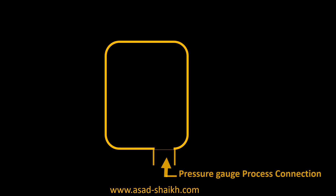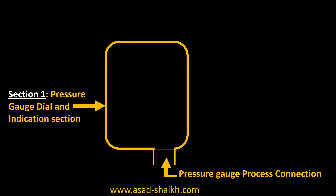Let's imagine that this is our pressure gauge and this is our process connection. We will describe section 1 as the place where the pressure gauge dial is present — this is the place where we can read the pressure gauge readings.